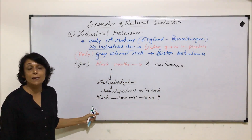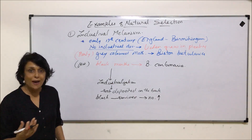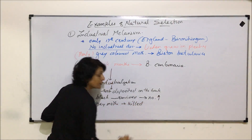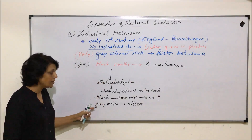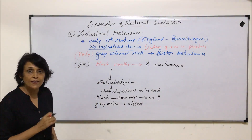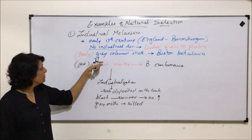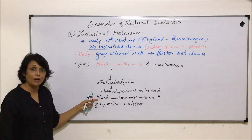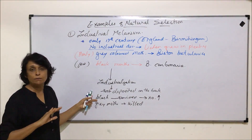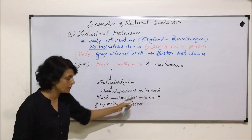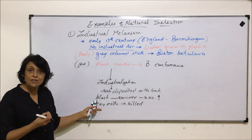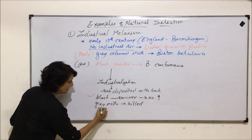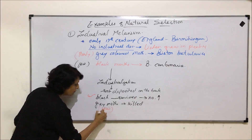Now, with the background turned black, the gray-colored moths became very clearly visible on this darker background. So the gray moths were killed because they were easily visible. After the changed condition, the scenario changed completely: originally gray were more and black were less, but now the black ones blended perfectly, survived, reproduced, and their number increased, while the gray ones became very few.